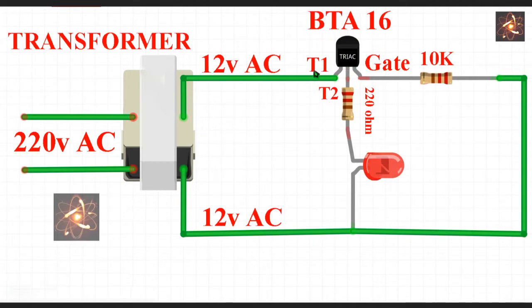Basically T1 and T2 is terminal 1 and terminal 2 and the last pin is gate. Gate is connected with a 10K resistor and opposite side of the resistor is connected with 12V AC.